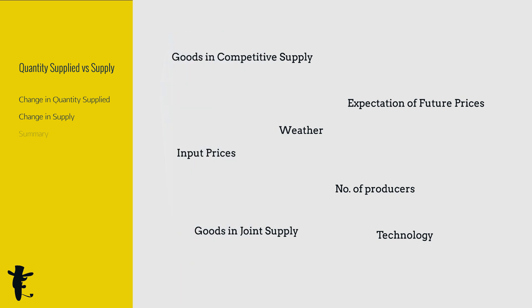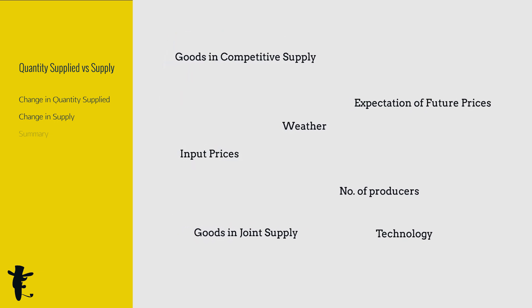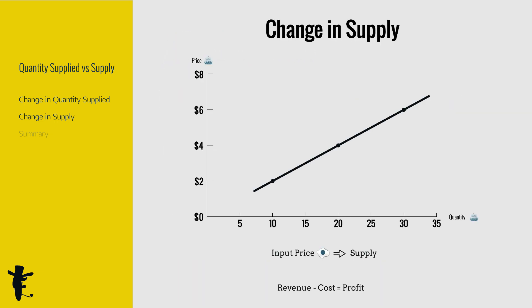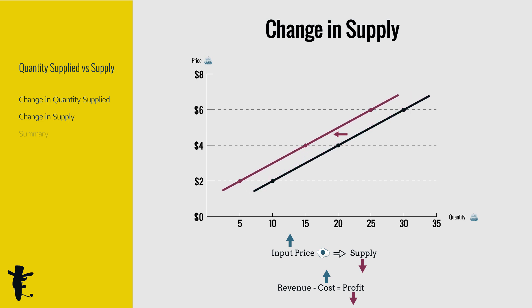Remember, there are other factors affecting supply as well. For instance, when the price of eggs increases, producing cakes gets more expensive. We'll bake fewer cakes at every price — at $2, at $4, at $6, at every price. So the entire supply curve shifts to the left. In econ speak, we say this is a decrease in supply.